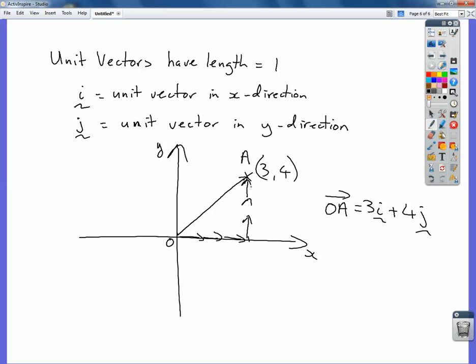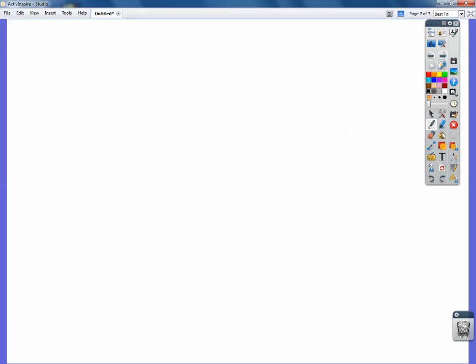Now we use these vectors to find any vector in space. So here's a vector here. It starts at the point (3,4), let's call that A. It finishes over here at (7,8). And so the vector from A to B.